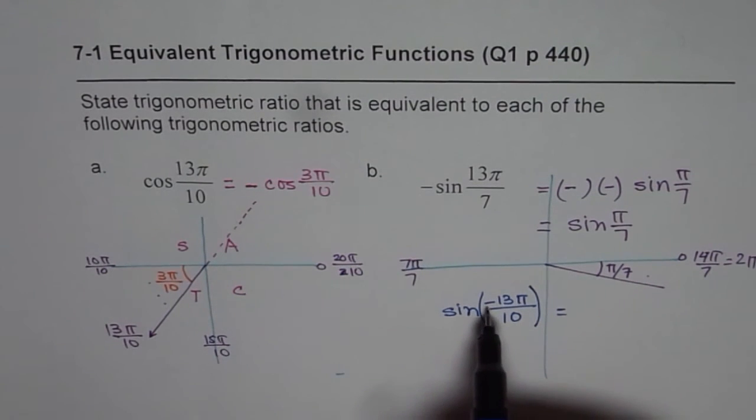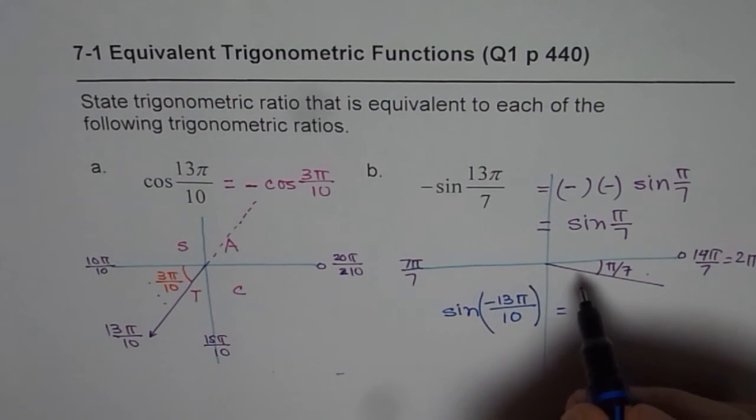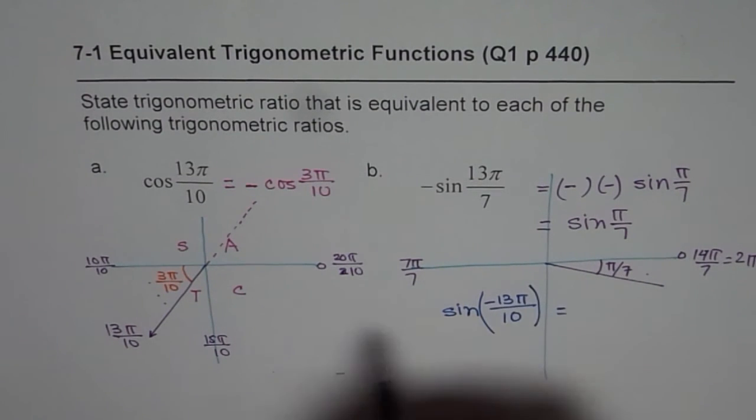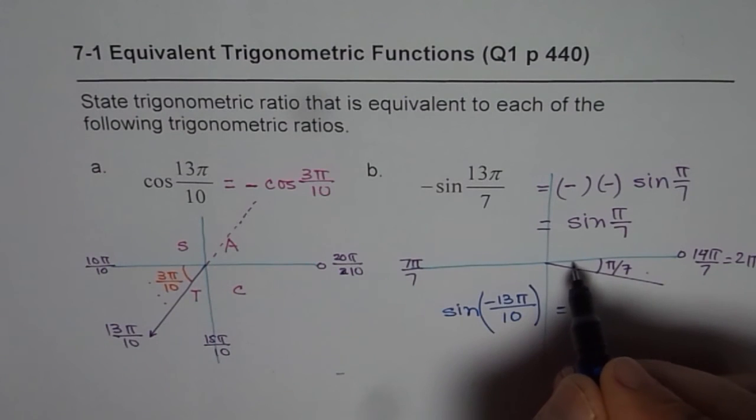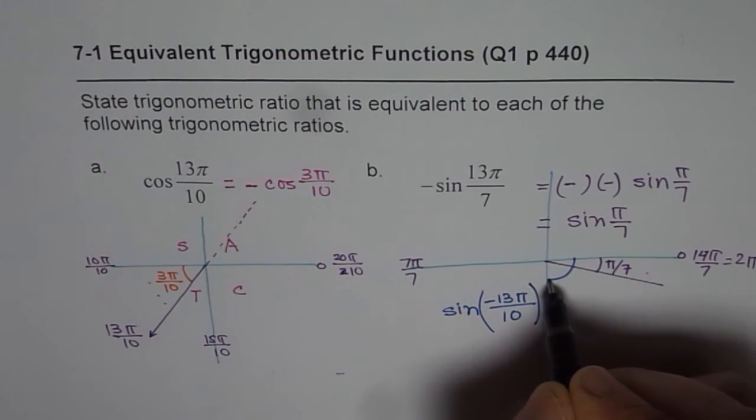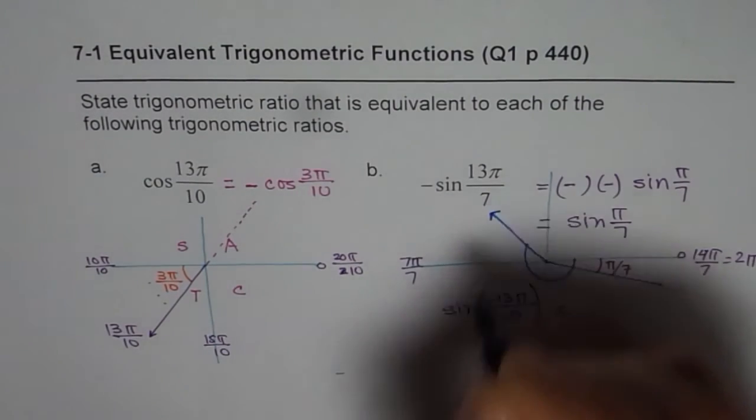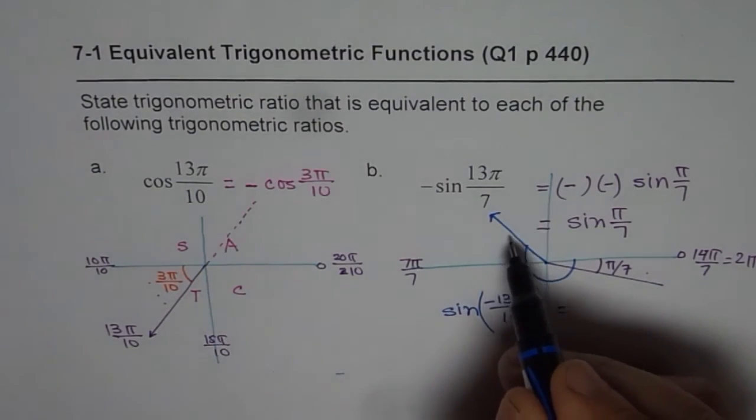When I see the angle is negative, that means we are going clockwise direction, correct? So 13π by 10 as we did here, will go actually in the clockwise direction. And so we land up here in this case. That will be the terminal arm. Since the terminal arm is in quadrant 2, sin is positive.